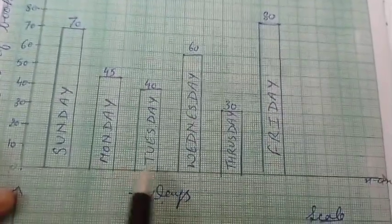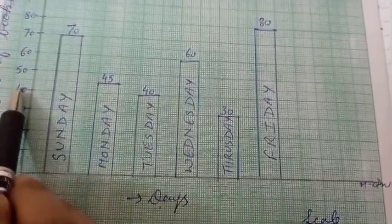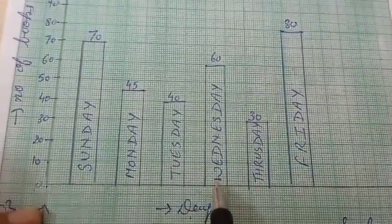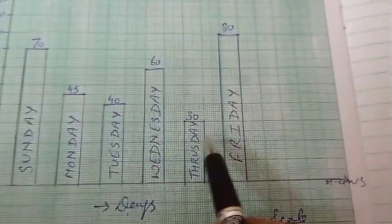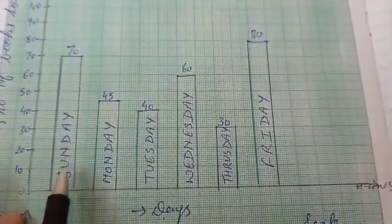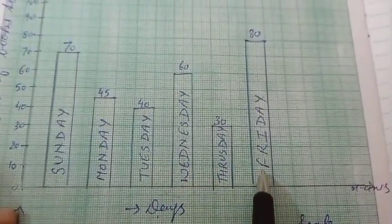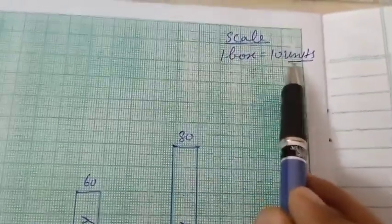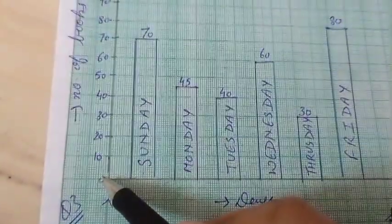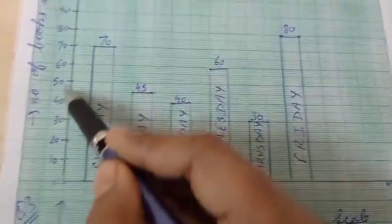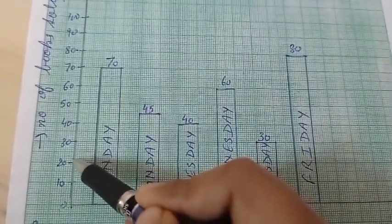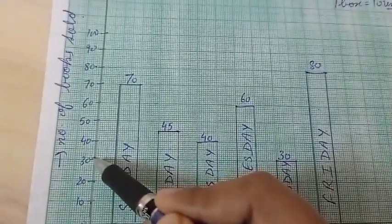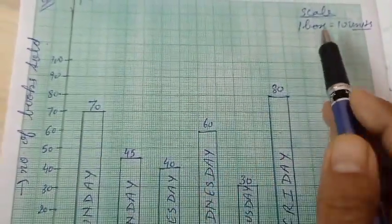On Tuesday, leave one box and draw the bar up to 40. On Wednesday, leave a box and draw up to 60. On Thursday, after leaving a box, draw up to 30. After every bar leave one box. Most importantly, write the scale: one box is equal to 10 units, because the gap between markings is 10. Writing the scale is compulsory.